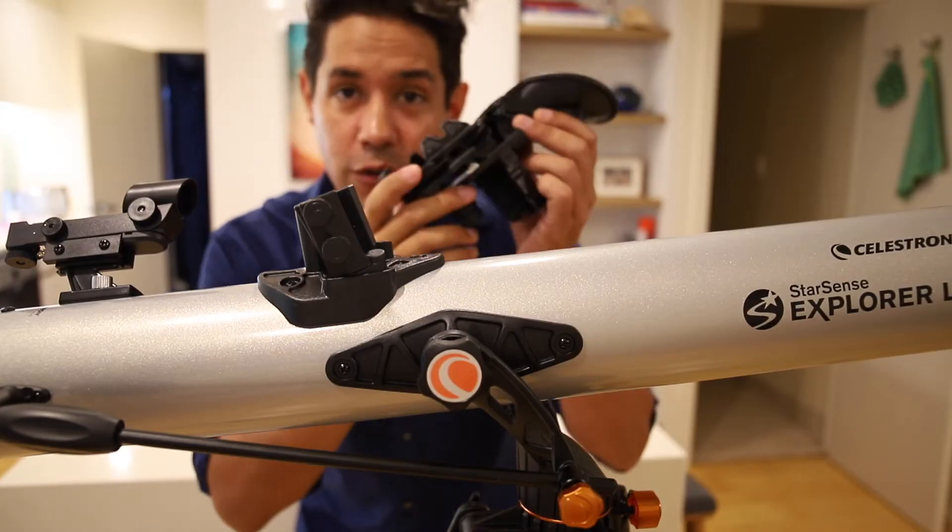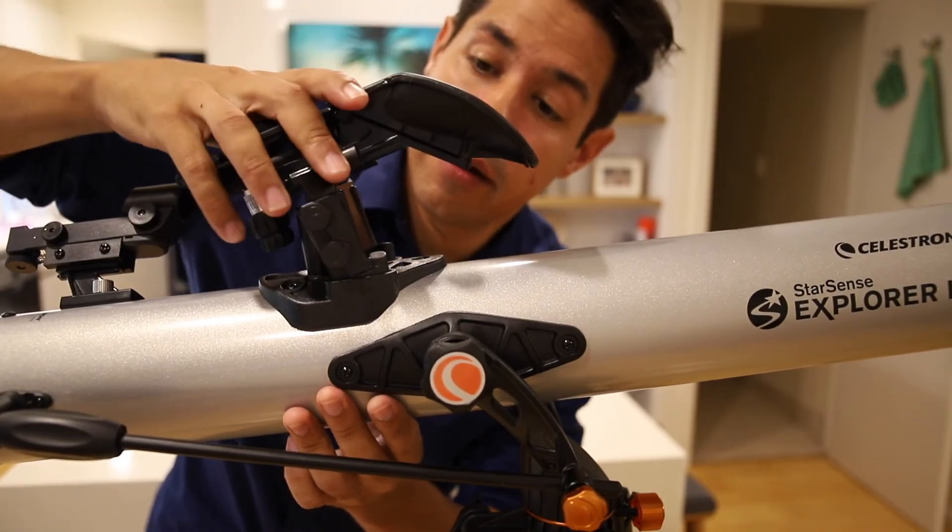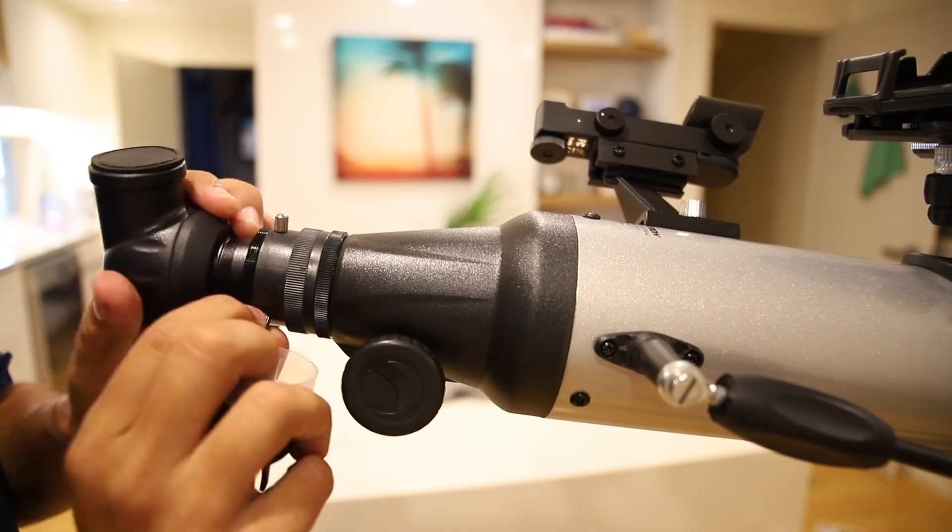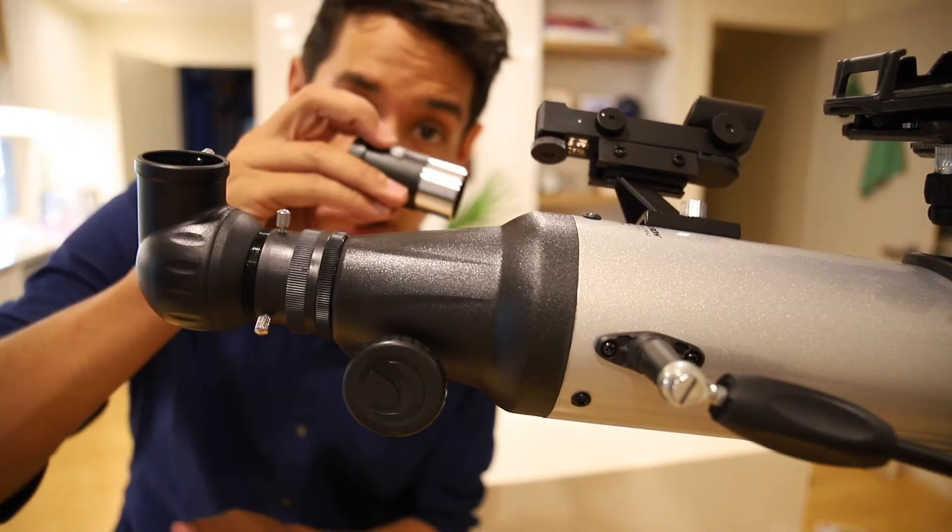Now we want to drop in the cradle, so just loosen these two nuts and drop the cradle all the way down and tighten. Add the star diagonal and pop in an eyepiece.